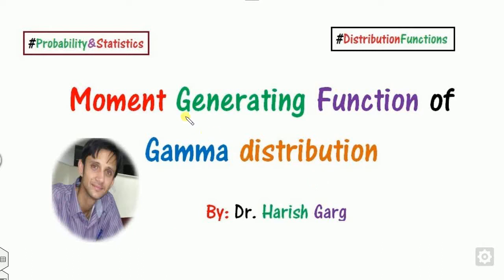Hello everybody, welcome to the next class on probability and statistics. Today we will discuss about how we can derive the moment generating function, called as the MGF, of the gamma distribution.